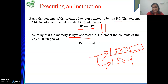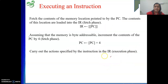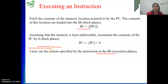Our assumption is that each instruction is the same length, the machine is byte addressable, and each instruction is four bytes. So the next location is always the current content of PC plus four. This plus-four comes from our assumption. Once the instruction is in the IR — in parallel with the PC increment — we decode it. After decoding we know what to do next, and whatever we need to do, we carry out in the execution phase.